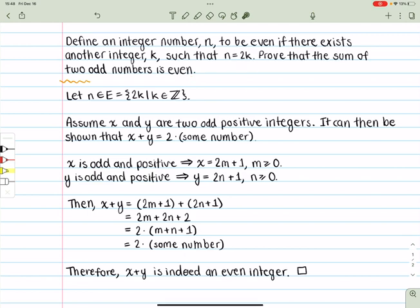So we first start with the fact that we're given x is odd and positive, which really implies that x is 2 times some number, we'll call that m, greater than or equal to 0 plus 1. Then we'll say that y is odd and positive, and similarly y should be defined by 2n plus 1, where n is also greater or equal to 0.